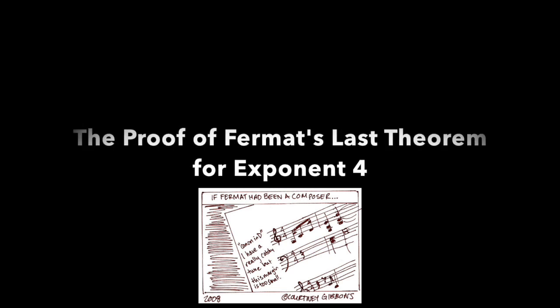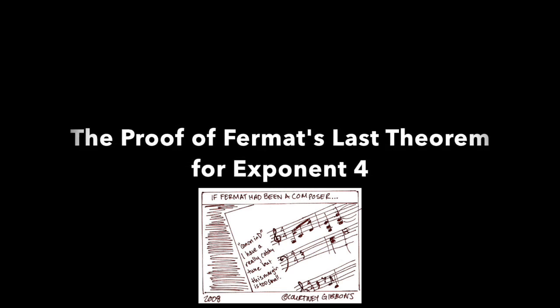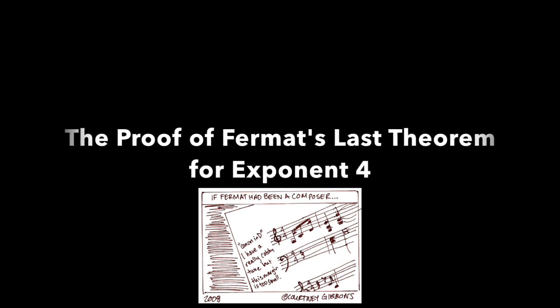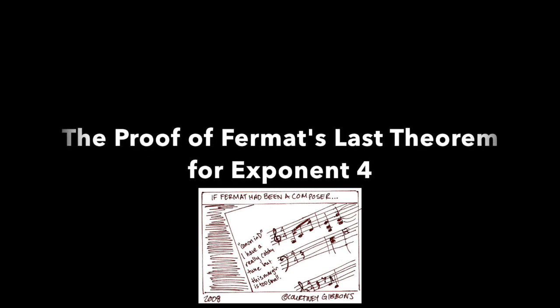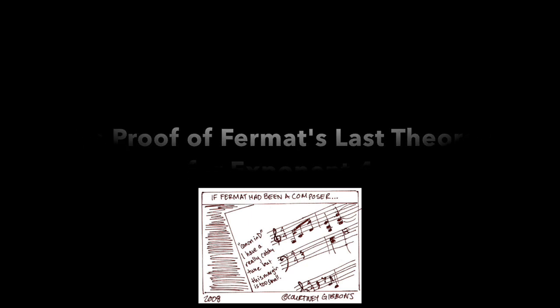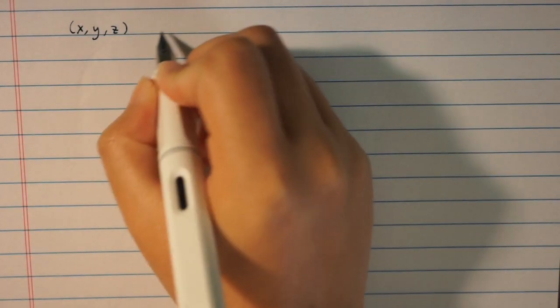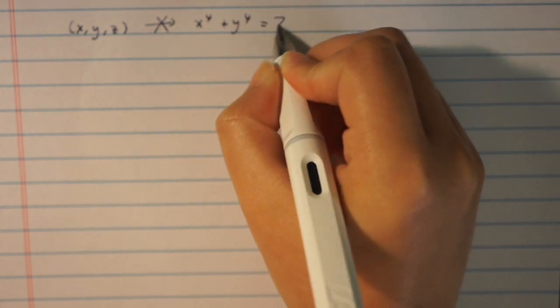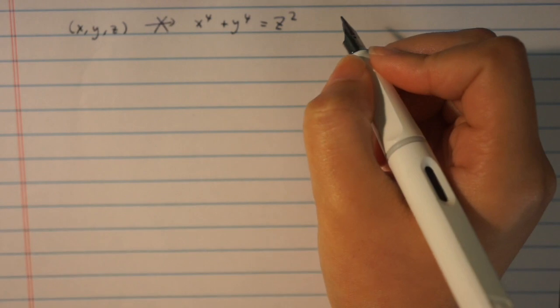It's interesting that Fermat's last theorem was scribbled in the margin of one of his books. However, we can find Fermat's proof for the particular exponent n equals 4 in one of his books. He proved the stronger statement that x to the fourth plus y to the fourth equals z squared does not have any positive integer solutions.